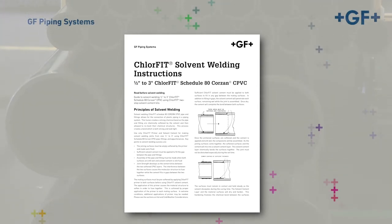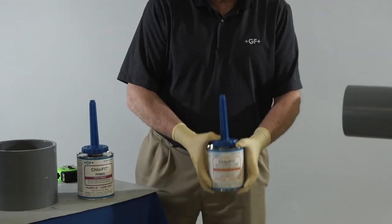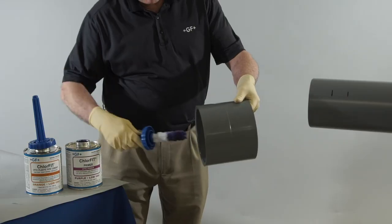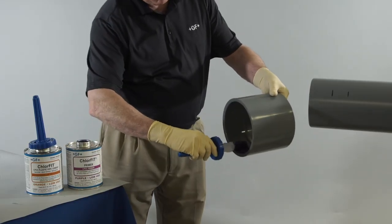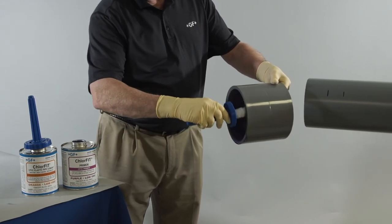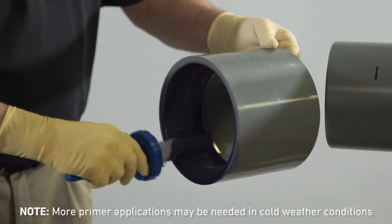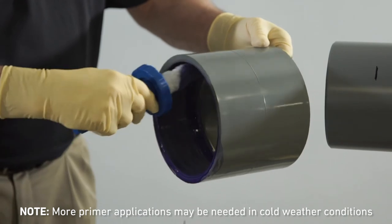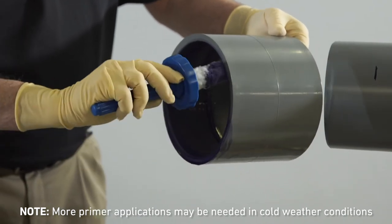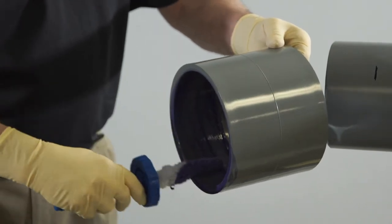To begin the solvent cementing process, ensure you have the correct applicators. The applicators should be approximately half the diameter of the pipe being solvent welded. Stir or shake the solvent cement before using. Aggressively apply the primer into the fitting socket, keeping the surface and applicator wet until the surface has been softened. While using the applicator inside the fitting socket, ensure the applicator remains in constant contact with the fitting socket surface. Redip the applicator in primer as required. More applications of primer may be needed in cold weather conditions.